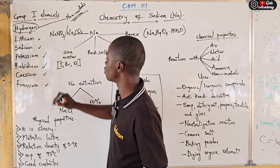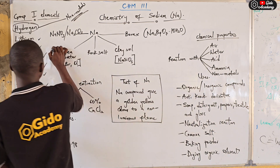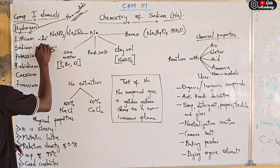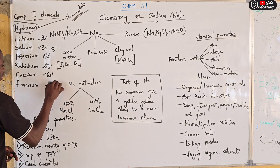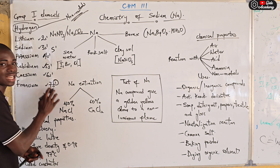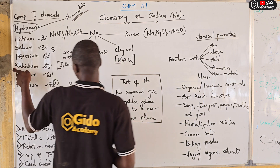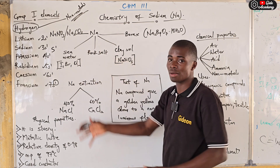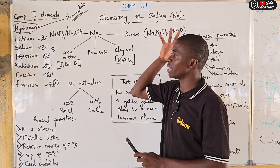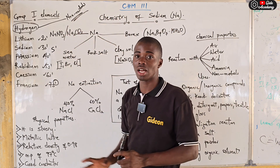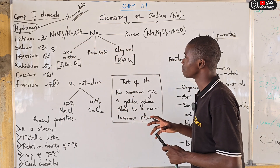The Group 1 metals are lithium, sodium, potassium, rubidium, cesium, and francium. They all have the electronic configuration ending in s1: 2s1, 3s1, 4s1, 5s1, 6s1, and 7s1 respectively. They all have one electron in the s orbital and are s-block elements. From lithium to francium they are metals, while hydrogen is a non-metal.